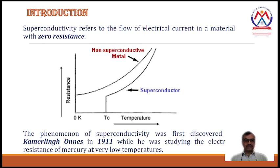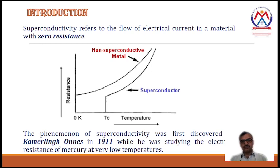So let's discuss what is superconductivity. Superconductivity refers to the flow of electrical current in a material with zero resistance. As you know, the basic fundamental of resistance is that resistance is the opposition to the flow of electrons. So if resistance becomes zero, the current will flow without any hindrance.